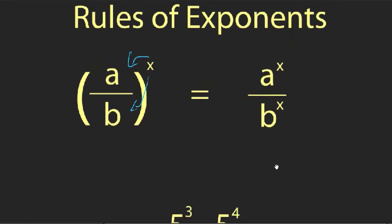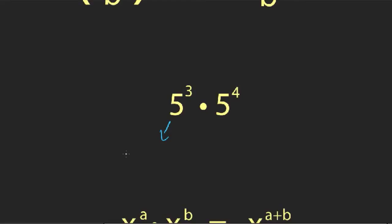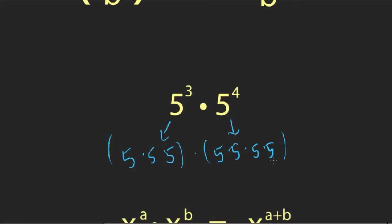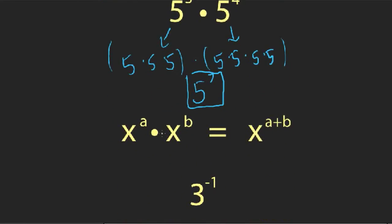Let's do another example: five to the third times five to the fourth. Five to the third gives you three fives, and five to the fourth gives you four fives. In total, since this is all multiplication, we have seven fives — three from the first term and four from the second, and three plus four makes seven. So the general rule is: x to the a times x to the b equals x to the a plus b. As long as you're multiplying exponential expressions with the same base, you can add the exponents.